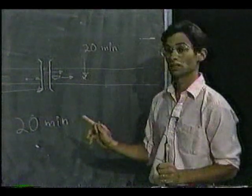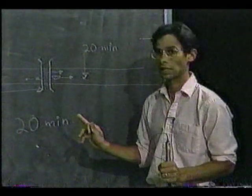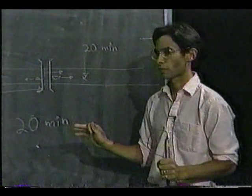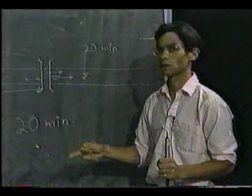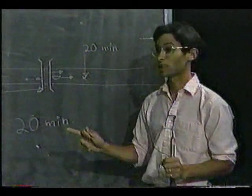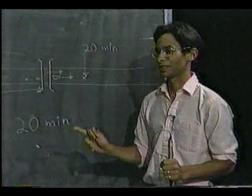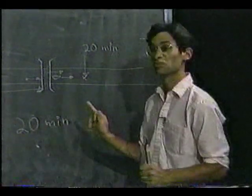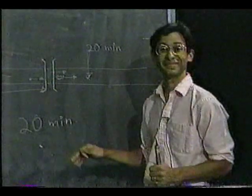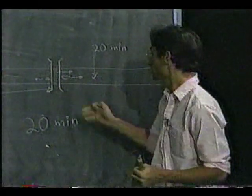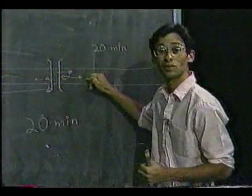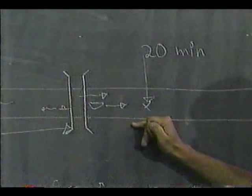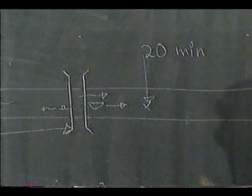And the answer is the river's flowing three miles an hour. And you can get it, but it's pretty hard. The way to do it the easy way is to consider your frame of reference to be with respect to the surface of the water rather than to the shoreline. And let me explain what we mean by that.